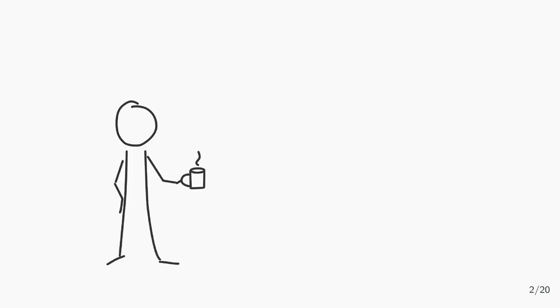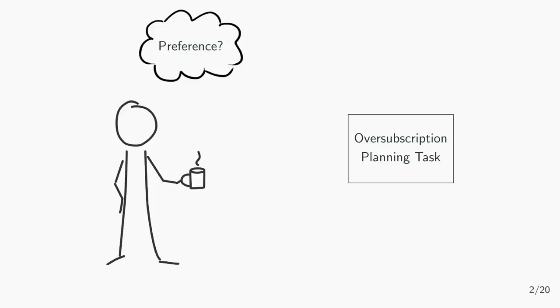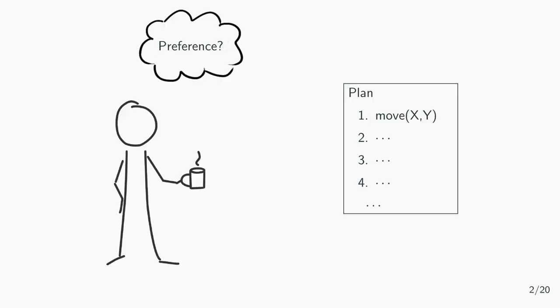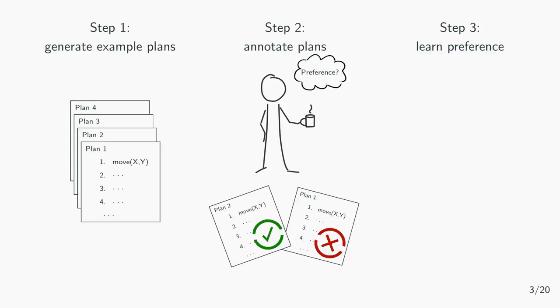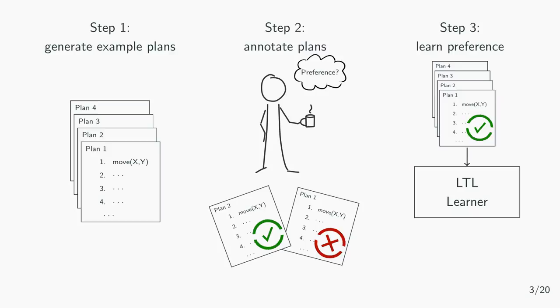We have a user and an oversubscription planning task. The user has some preference in mind but isn't able to define it specifically, but he's able to identify whether a plan satisfies his preference or not. Given this setup we learn temporal plan preferences the following way. First we generate example plans for the given planning task and then we ask the user to annotate them with respect to his preference. In the third step we use an LTL learner to learn an LTL formula which identifies the input plan examples. This formula then hopefully resembles the user's preference.